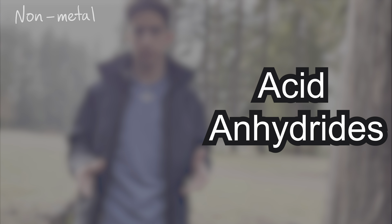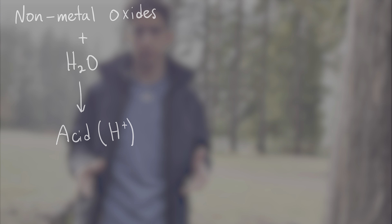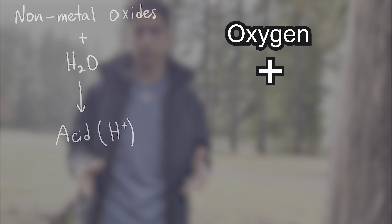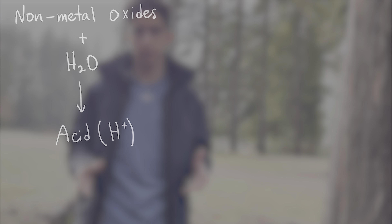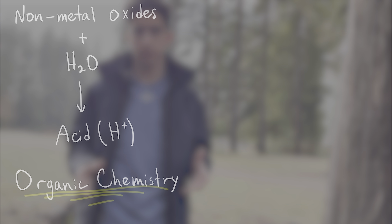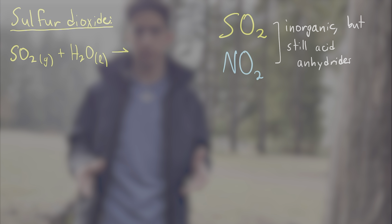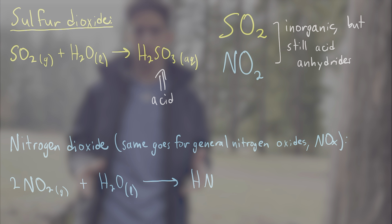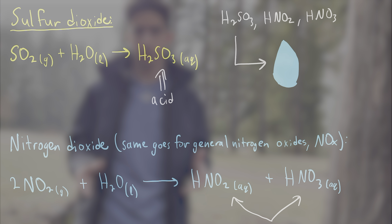The chemistry behind acid rain involves compounds called acid anhydrides. Broadly speaking, acid anhydrides are nonmetal oxides that form an acidic solution when mixed with water. Nonmetal oxides are any compounds made up of oxygen and nonmetallic elements. When sulfur dioxide is mixed with water, it forms sulfurous acid, H2SO3. When nitrogen dioxide is mixed with water, it forms nitrous and nitric acids, HNO2 and HNO3. All of these acids form in rain droplets as they fall to earth, creating acid rain.